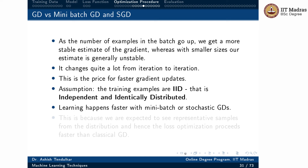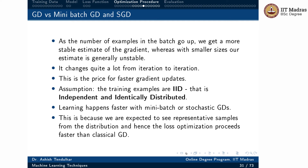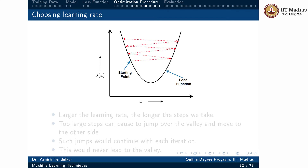Learning happens faster with mini-batch and stochastic gradient descent, because we are expected to see representative samples from the distribution, and hence loss optimization proceeds faster than with full batch gradient descent. One critical point is selecting the learning rate — it controls how many steps we take in the direction of the gradient. A larger learning rate allows longer steps, so larger learning rate means larger updates.